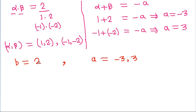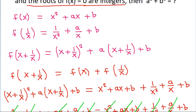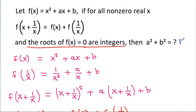So b is equal to 2 and a is equal to minus 3 or 3. If b is equal to 2, then b squared will be equal to 4. And if a is equal to minus 3 or 3, then a squared will be equal to 9. So a squared plus b squared will be equal to 9 plus 4, and it is 13.